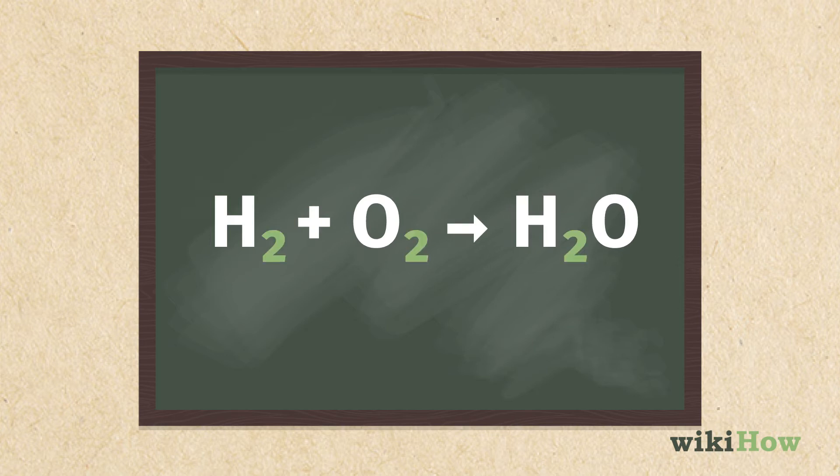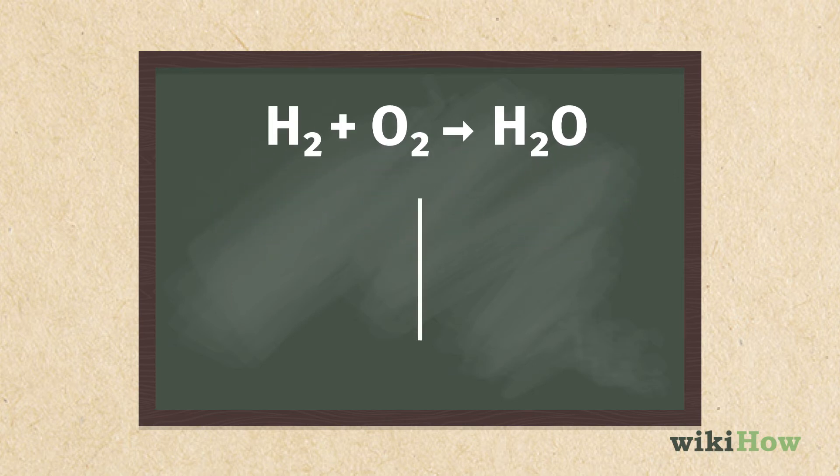Count the number of atoms in each element on each side of the equation and list them under that side. For the equation H2 plus O2 equals H2O, there are two hydrogen atoms being added to two oxygen atoms on the left. So you would write H equals 2 and O equals 2 under the left side.